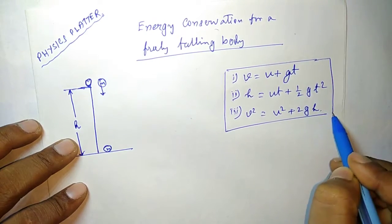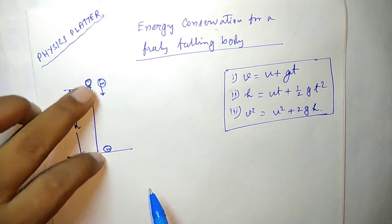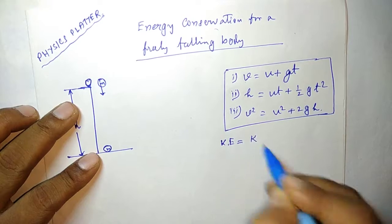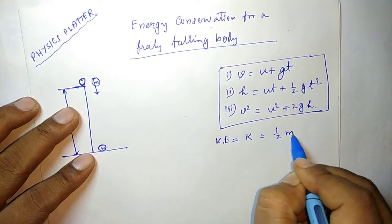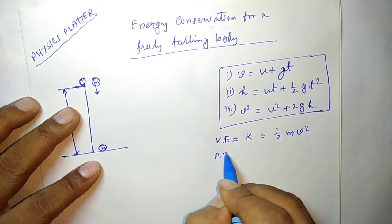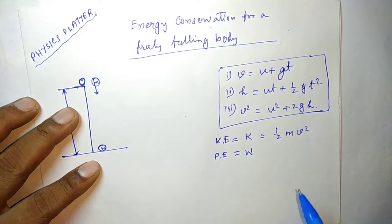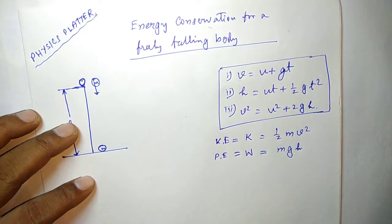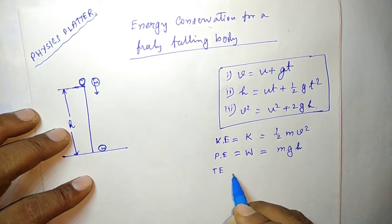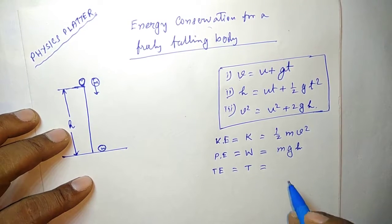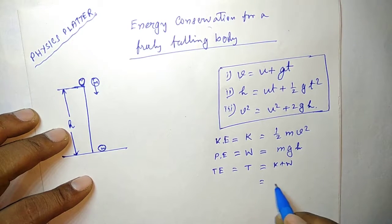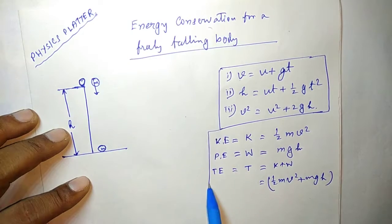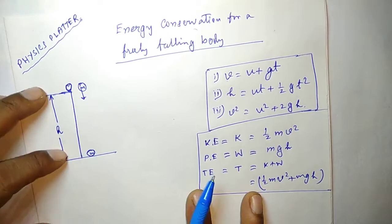For the mechanical energy, there are two types of energy involved. The kinetic energy KE = ½mv², and the potential energy PE = mgh (force into displacement). The total energy TE = kinetic energy + potential energy = ½mv² + mgh. These are the formulas I will be using.